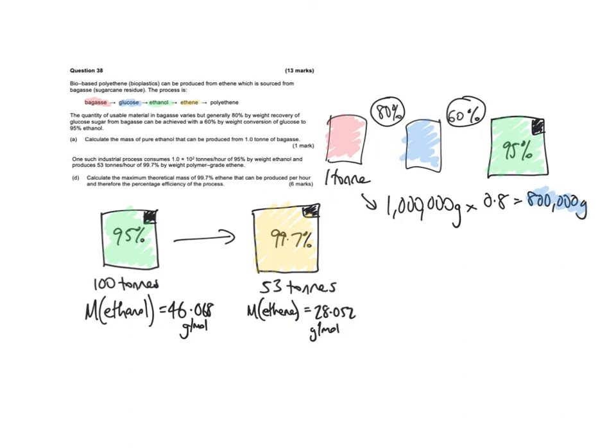Then we're going to take that 800,000 grams and times it by 0.6 to get the next part. Times it by 0.6 to get 480,000 grams. And that will be the ethanol. But it's the 95% ethanol, so this 480,000 grams is this entire box. It's not just the ethanol from it.